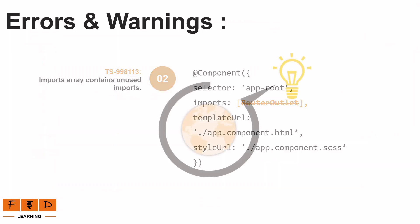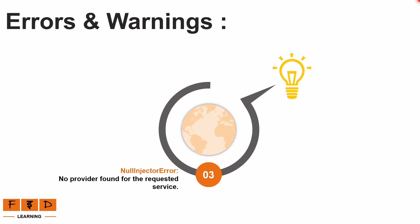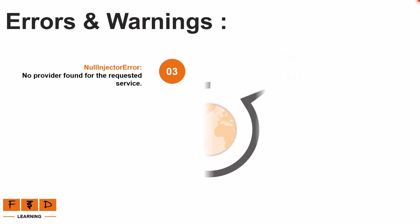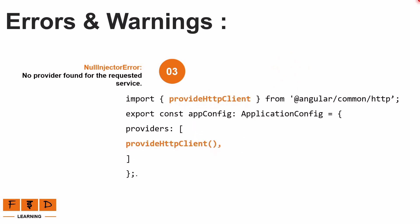Now let's discuss one more error: the Null Injector Error — no provider found for the requested service. This error occurs when Angular tries to create an instance of a service, looks for a provider that can create it, and if it can't find one, it throws a Null Injector Error. To resolve this in Angular 19, we need to add the HTTP client provider using the provideHttpClient function inside the providers array in the app.config.ts file.